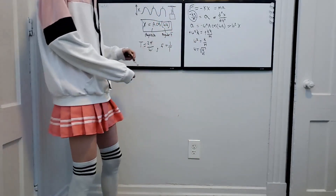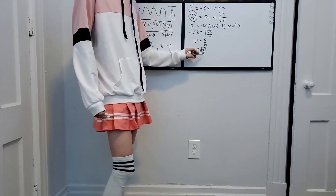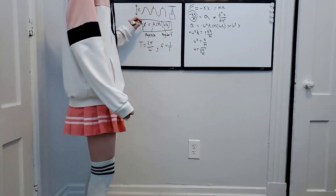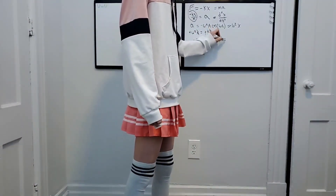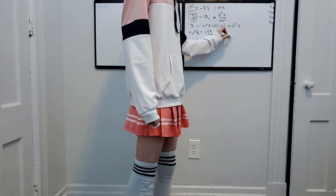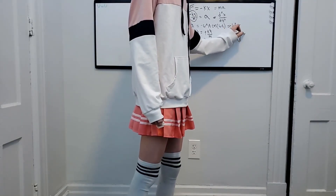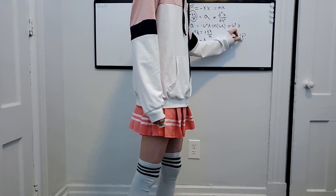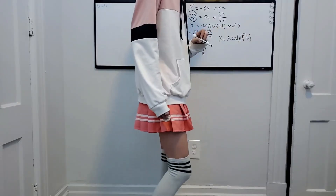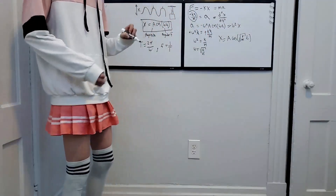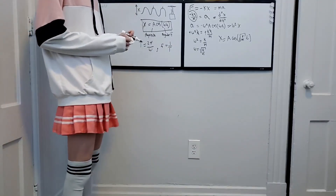Now that we know what omega is in terms of the spring constant and the mass, we can put that into our equation of motion and it makes a bit more sense. So we can say x is equal to A cosine of the square root of k over m, times t. That's basically the basics.